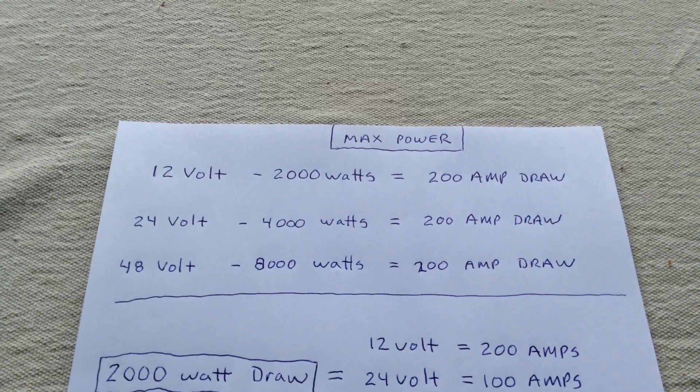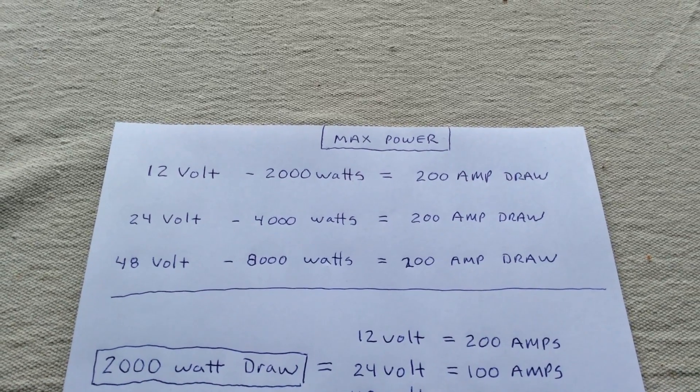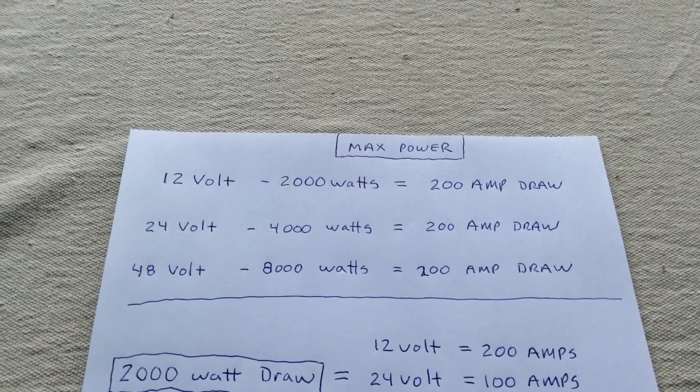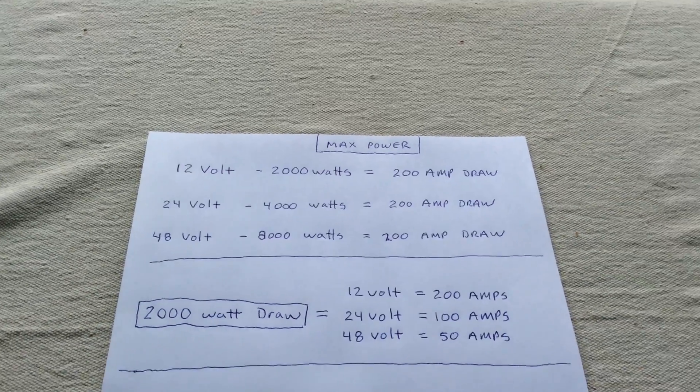Now a 24 volt, 4,000 watts, still got to have the big cabling. 48 volt, you're not going to run 4,000 watts. So what are we going to look at here?